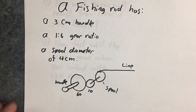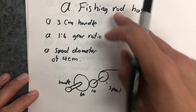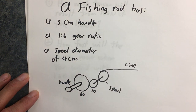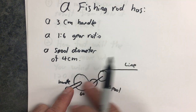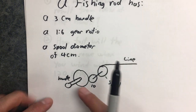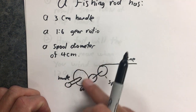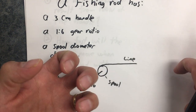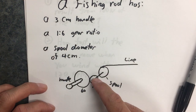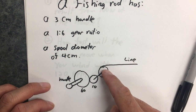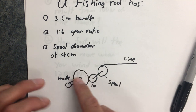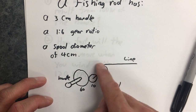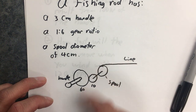I'm going to show you how to solve a fishing rod question. We have a fishing rod with a three centimeter handle, a one to six gear ratio, and a spool diameter of four centimeters. In the picture, you've got a handle turning a gear. This gear has teeth that interlock with another gear, which is attached to a spool. When this gear rotates, it causes the spool to turn and pull in the fishing line.